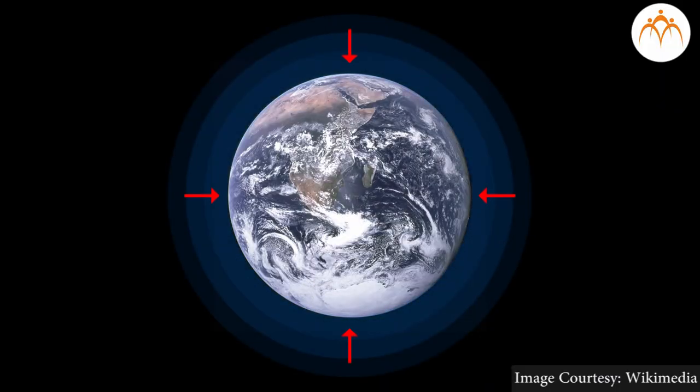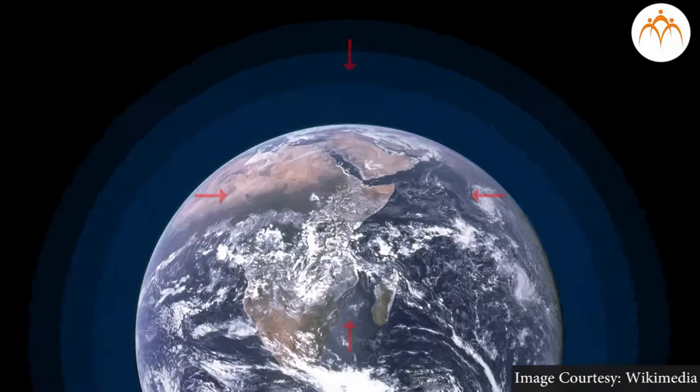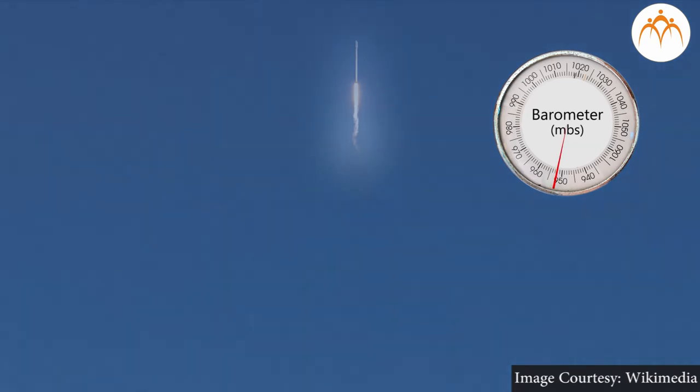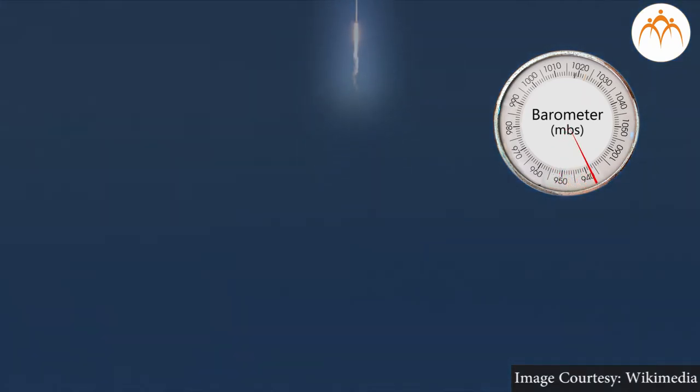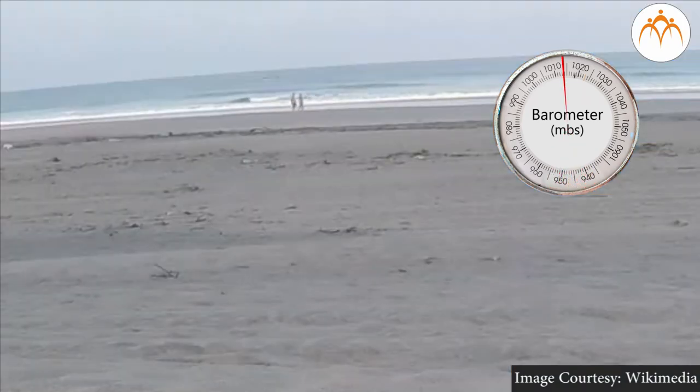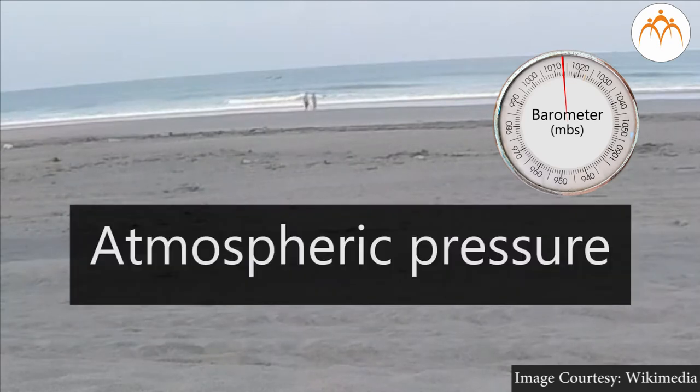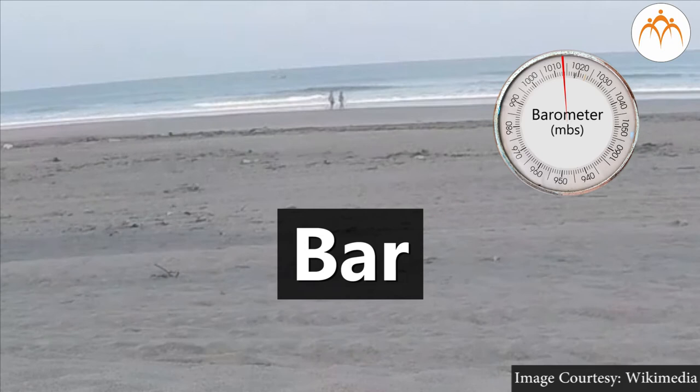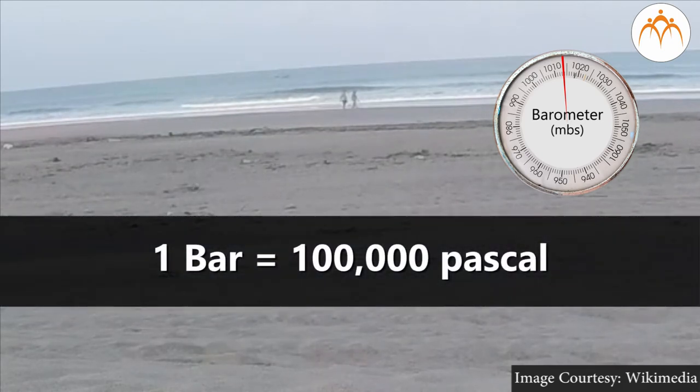Now we know that air exerts pressure. As we go higher and higher in the sky, air becomes thinner and thinner. Less air, less pressure as we move away from earth. Air pressure at sea level is called atmospheric pressure. Air pressure is measured in bar. One bar is equal to one hundred thousand pascals.